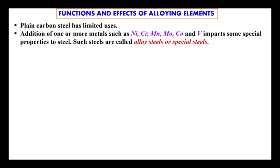Now we look at the functions and effects of alloying elements. Plain carbon steel has limited uses, but by adding alloying elements like nickel, chromium, manganese, molybdenum, cobalt, and vanadium to steel, we can modify its properties to manufacture different types of application-oriented materials. Such steels are called alloy steels or special steels. Each element provides a different property improvement, enabling the manufacture of different things.